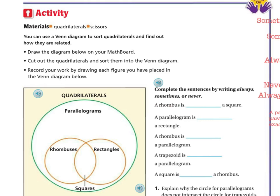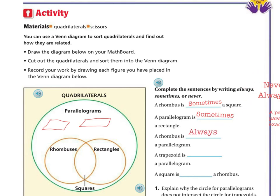So, for example, a rhombus. So let's draw a rhombus. It is a parallelogram. So here's my rhombus. Not a very good rhombus. And a rhombus is sometimes a square. So sometimes a rhombus can be a square. A parallelogram is sometimes a rectangle. And a rhombus is always a parallelogram.